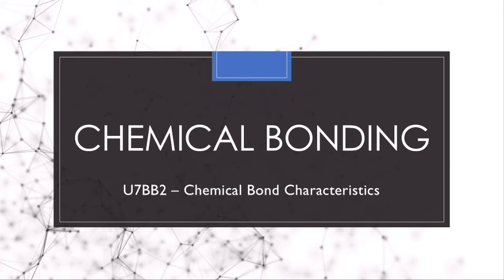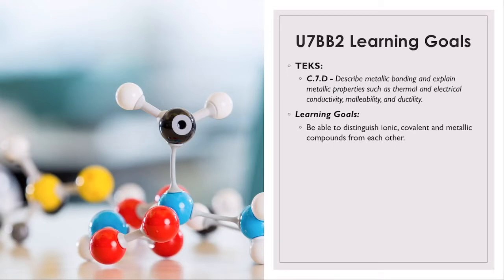Hey guys, this is Ms. Buffard, and in this video we're going to talk about chemical bonds and some of the characteristics that substances made up using those types of bonds have. Our learning goals are to be able to distinguish ionic, covalent, and metallic compounds from one another.